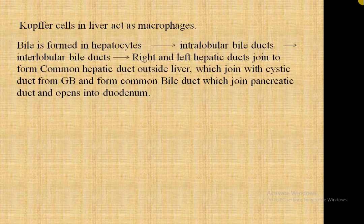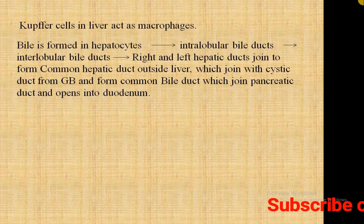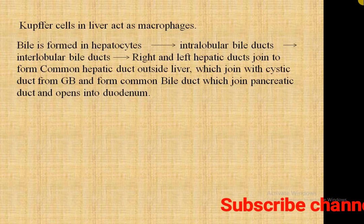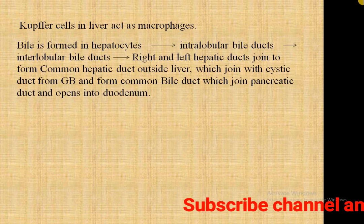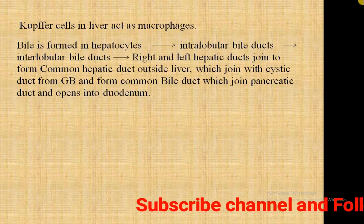The interlobular bile ducts form the right and left main hepatic ducts, which exit the liver and join to form the common hepatic duct. This joins with the cystic duct to form the bile duct, which then joins the pancreatic duct, and together they open as a common duct into the second part of the duodenum at the major duodenal papilla.